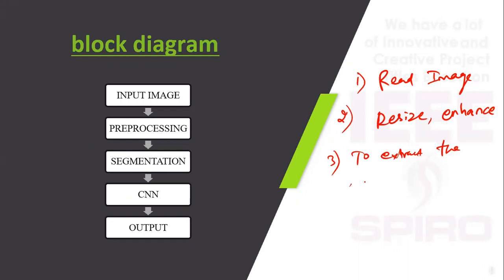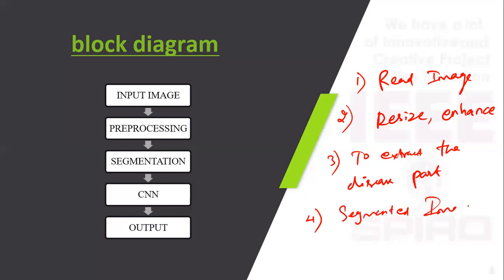After segmentation, the segmented image is trained by CNN. The CNN has a set of layers like convolution layer, ReLU layer, and max pooling layer, which take values from the layers to classify the image.